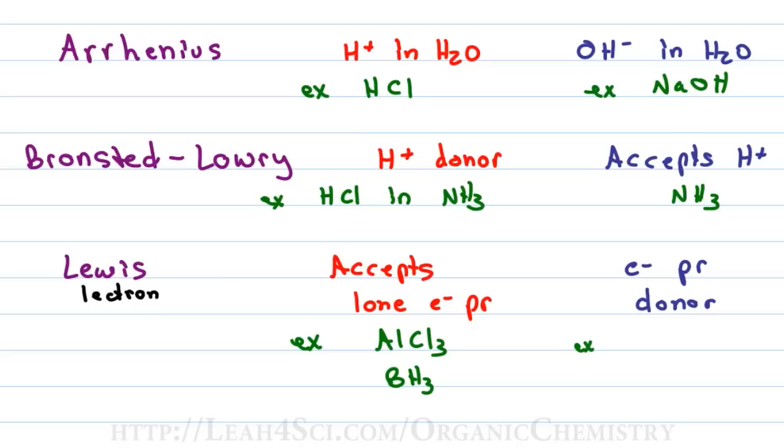A good example you'll see for a Lewis acid is AlCl3 or even BH3 which show up in your reactions, and the example for a base can be anything with a lone pair of electrons. For example, Cl- or even a pi bond as you'll see with your alkene addition reactions.